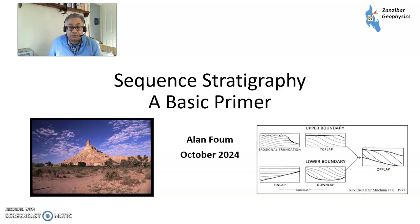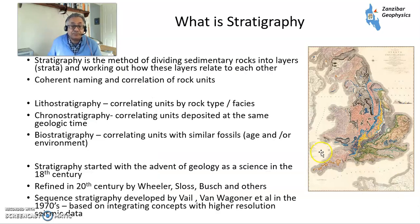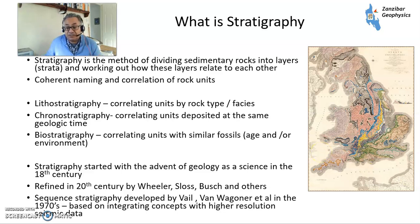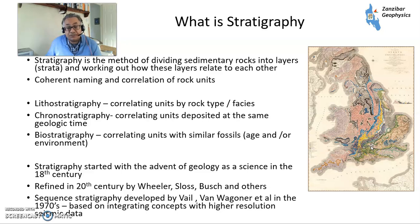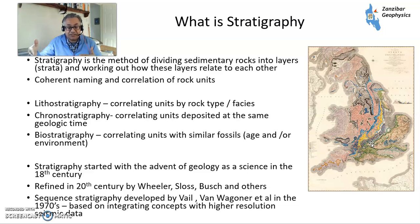So let's first of all define what stratigraphy is. Stratigraphy is a method of dividing sedimentary rocks into layers. Here's William Smith's geological map of England and Wales and Scotland, with the different colours representing different rock strata of different ages. That leads to coherent naming of rock units, which William Smith in the early 19th century was the first person to work out.